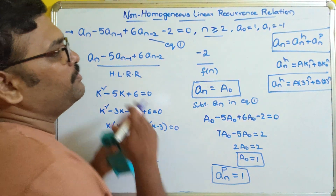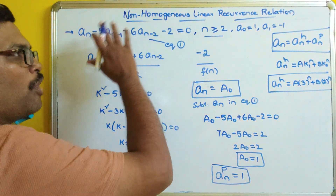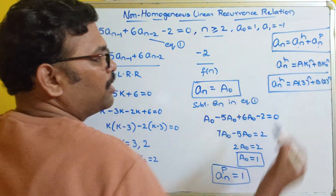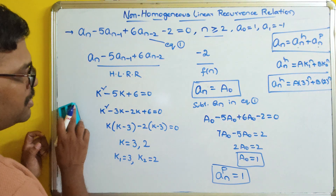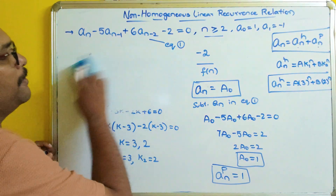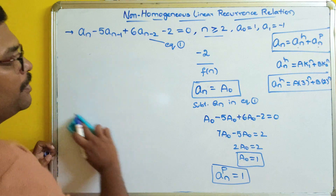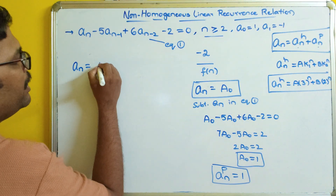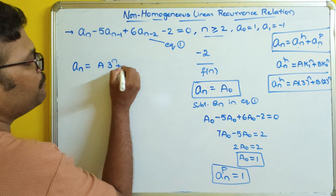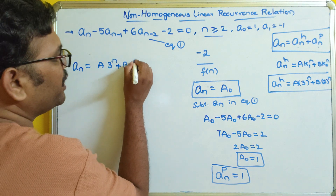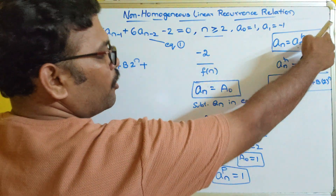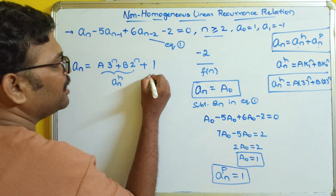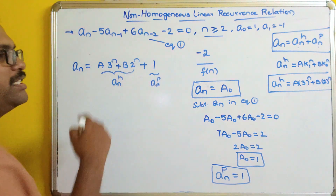Now the complete general solution for the non-homogeneous linear recurrence relation is a_n = a_n_h + a_n_p. This becomes: a_n = A·3^n + B·2^n + 1.